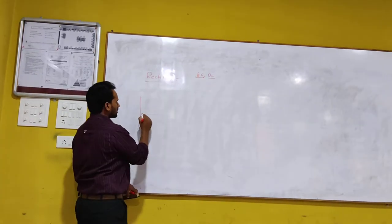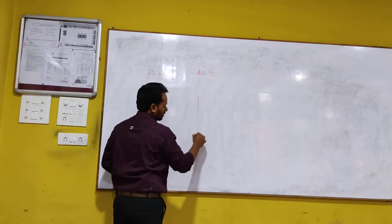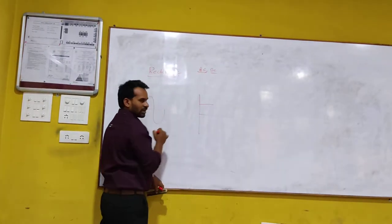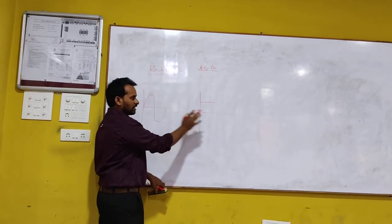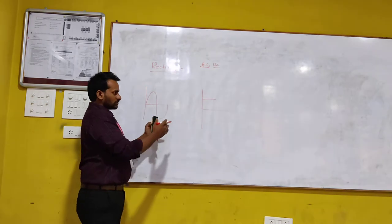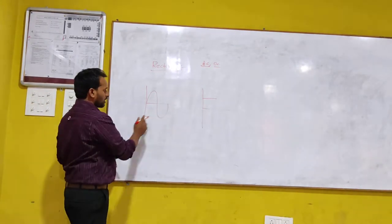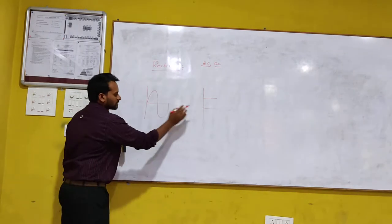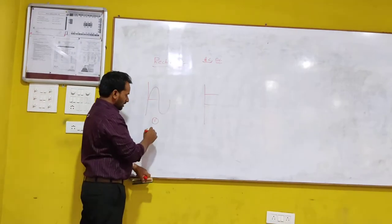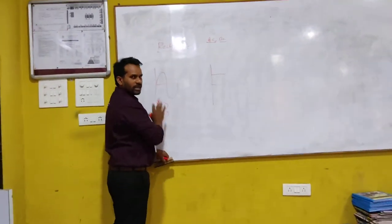If I want you to explain what is an AC signal, you simply draw it like this. If I ask you what is a DC signal, you draw like this. So this is the AC signal and this is the DC signal. I am going to discuss the properties of these two signals — two properties each.